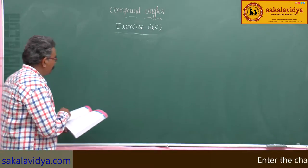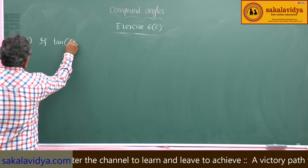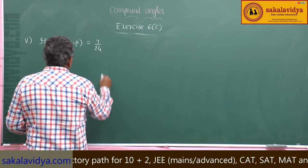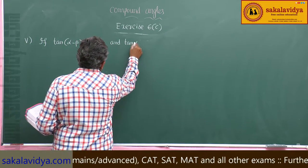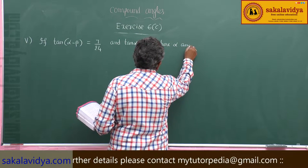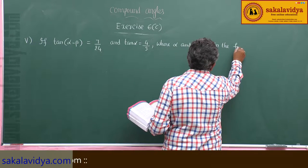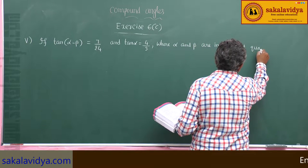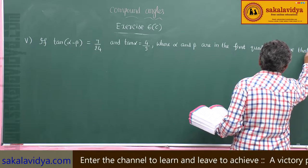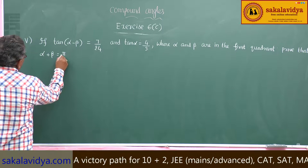Fifth problem: if tan(α - β) is equal to 7/24 and tan α is equal to 4/3, where α and β are in the first quadrant, prove that α + β is equal to π/2.